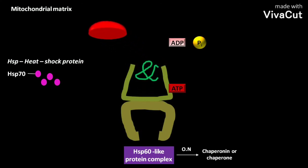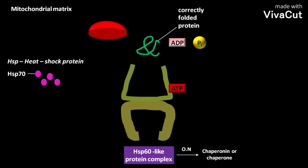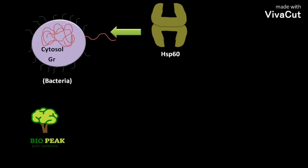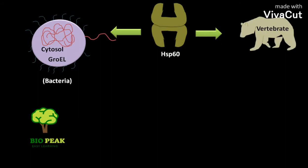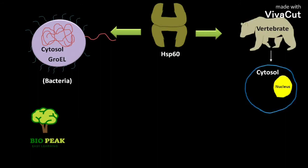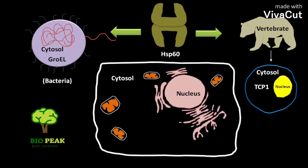If the ejected protein is incorrectly folded, the cycle repeats. The chaperonin protein found in mitochondria is called Hsp60. In bacteria, it is called GroEL, and in the cytosol of vertebrate cells, it is called TCP1. In eukaryotic cells, the endoplasmic reticulum contains a special Hsp70 otherwise called BIP, which helps to fold proteins.